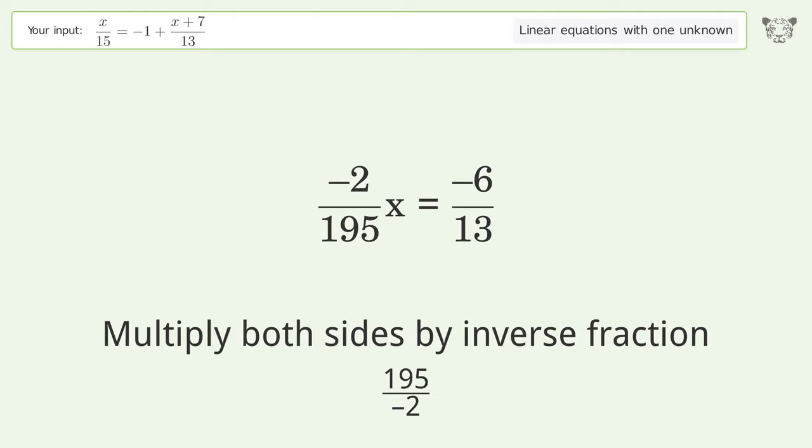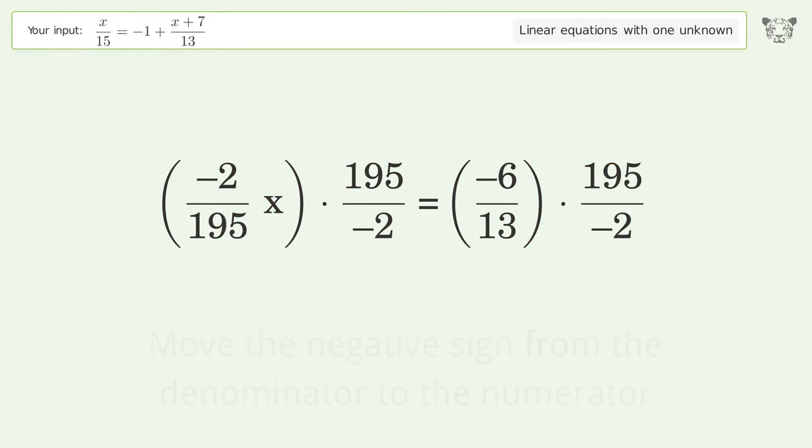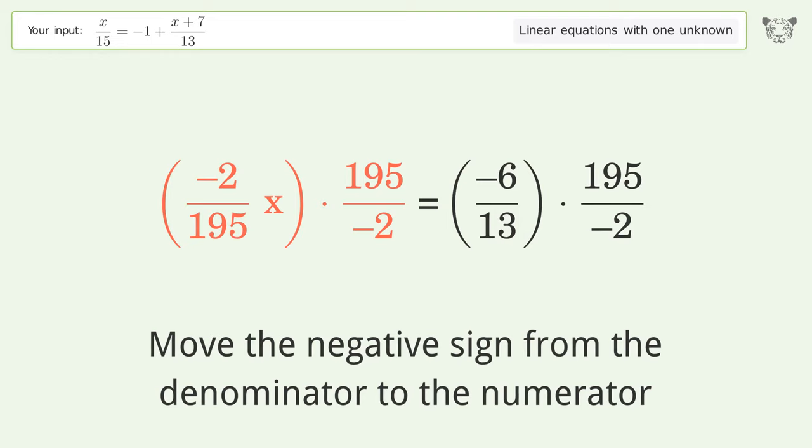Multiply both sides by inverse fraction, 195 over negative 2. Move the negative sign from the denominator to the numerator.